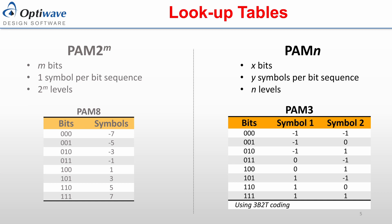An example for the PAM3 format using 3B2T coding is displayed, where the bit sequence 1, 1, 0 is mapped to the symbol sequence 1, 0. The number of unique symbols used is defined by the lookup table, which is 3 in this case: negative 1, 0, and positive 1.